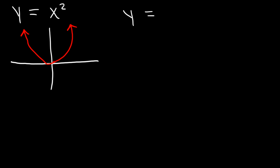Now what do you think is going to happen if we put a negative sign in front of it? The graph y equals negative x squared looks very similar to the first one, but it's going to reflect over the x-axis, which means it's going to face downward instead of opening upward.